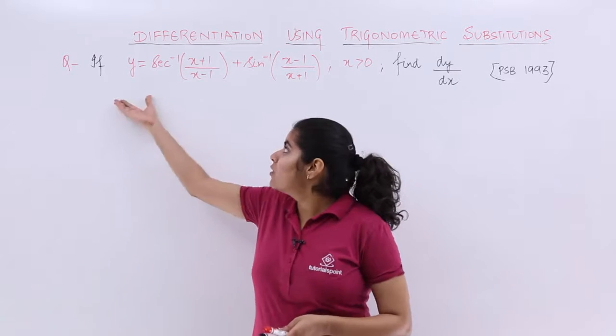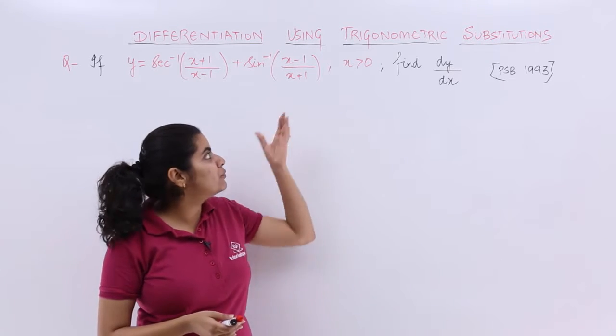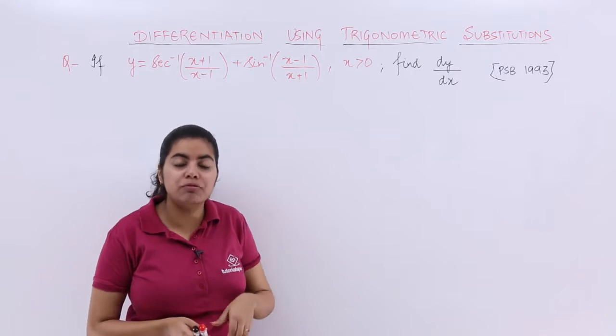The question says, if y is equal to secant inverse of (x+1)/(x-1) plus sin inverse of (x-1)/(x+1) for x greater than 0, you have to find dy/dx.